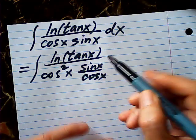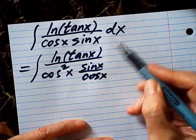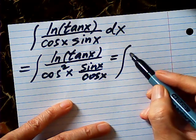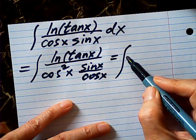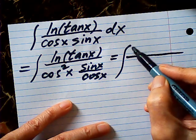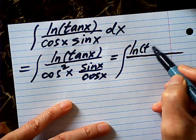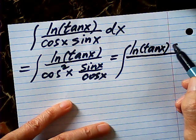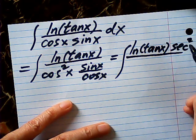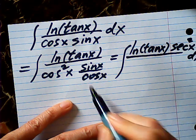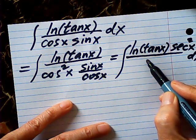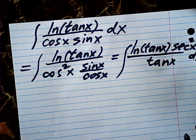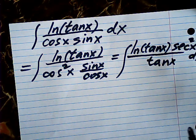Now by doing so I have a tangent x. So this one equal to integral log tangent x. This one becomes secant on top, right? Secant square x dx. This is a tangent x. This is a tangent x.